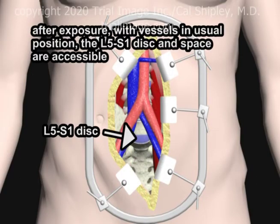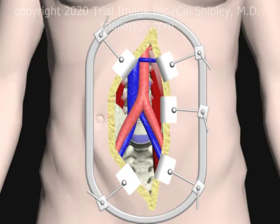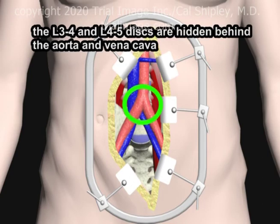After exposure, with the aorta and vena cava in their usual position, the L5-S1 disc space may be accessed by the surgeon. Unlike the L5-S1 disc level, the L3-4 and L4-5 vertebrae and discs are hidden behind the aorta and vena cava.